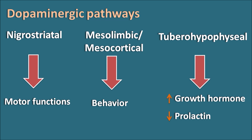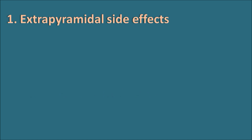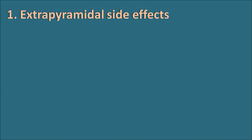Phenothiazines act as antipsychotics by acting on the mesolimbic or mesocortical pathway, thereby controlling psychotic behavior. At the same time, phenothiazines can also show their effect on the nigrostriatal pathway as well as the tuberoinfundibular pathway, leading to a few side effects. Extrapyramidal side effects are observed because of their effect on the nigrostriatal pathway.